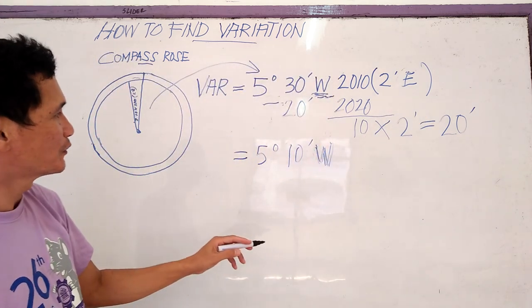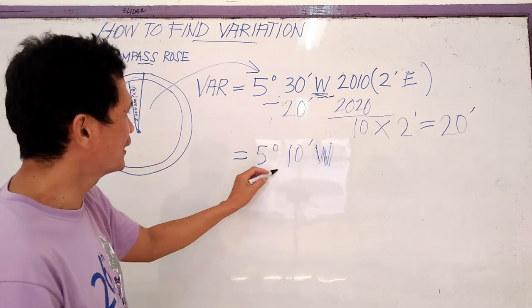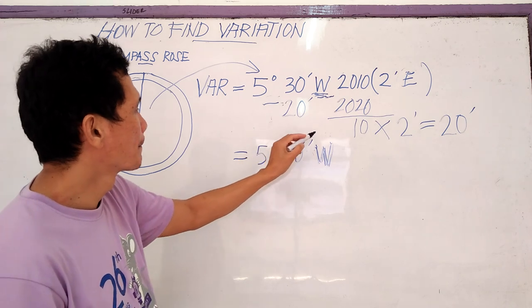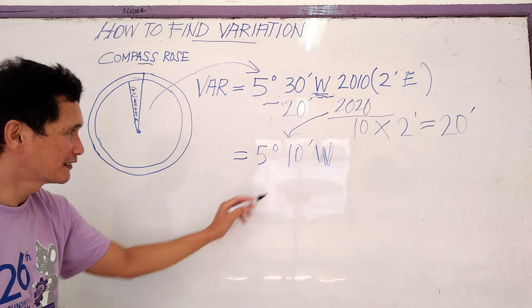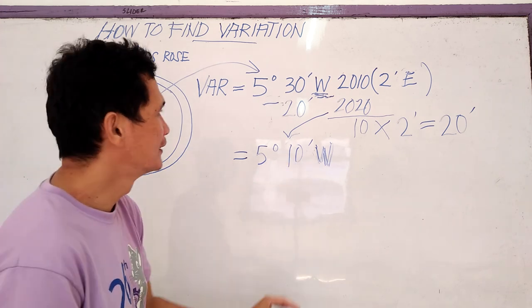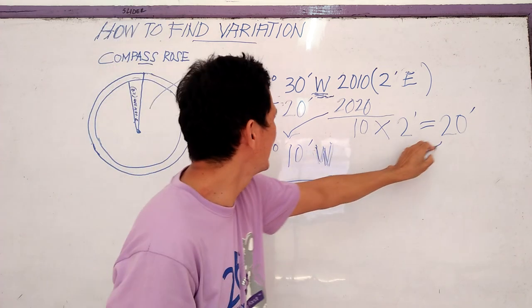So in 2020, the value of this is five degrees, ten minutes West. And this is 50 degrees.